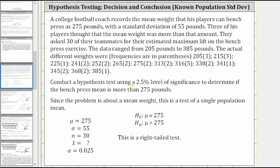Let's first list the given information. The population mean mu is 275 pounds. The population standard deviation is 55 pounds. Because 30 teammates are asked about their estimated maximum lift, n equals 30, the sample size. We don't have the sample mean yet. And alpha, the level of significance, is 0.025 as a decimal.